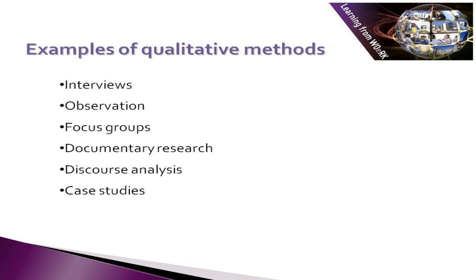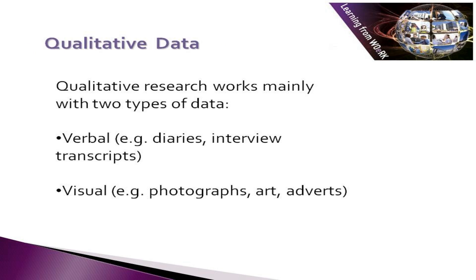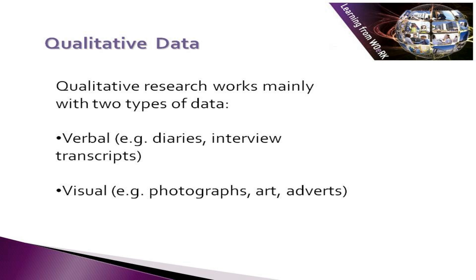Of course, researchers often use mixed methods within one study. This can involve combining different qualitative methods, or combining quantitative and qualitative methods that complement one another. The two main types of data that qualitative research works with are verbal data — for example interview transcripts or diaries — and visual data, for example art, adverts or photographs.